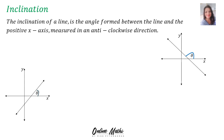Now what is that? The inclination of a line is the angle formed between the line and the positive x-axis, measured in an anti-clockwise direction. When you look at the sketch down below, you will see it's the angle theta formed between the line and the positive x-axis measured in an anti-clockwise direction.